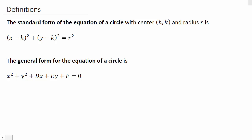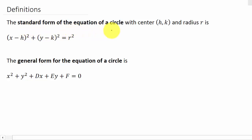In this video we're going to look at converting the equation of a circle from general form to standard form. The standard form of the equation of a circle with center (h, k) and radius r is: (x − h)² + (y − k)² = r². The general form is: x² + y² + dx + ey + f = 0. We'll be given the equation in general form and convert it to standard form.